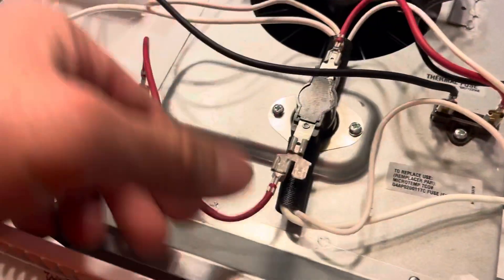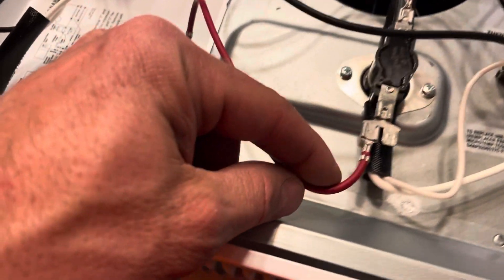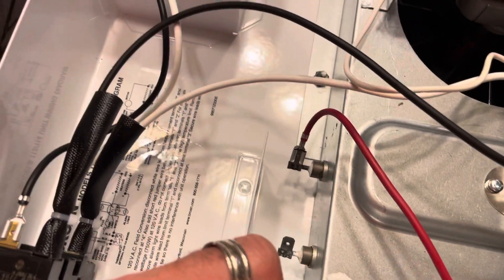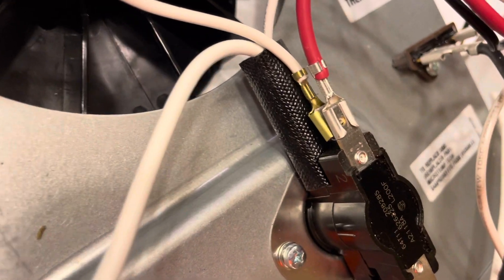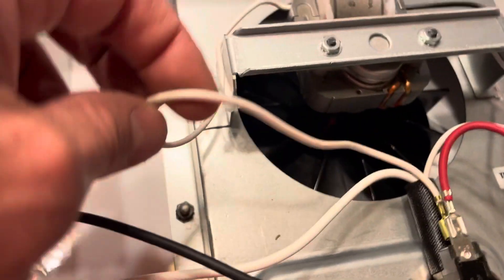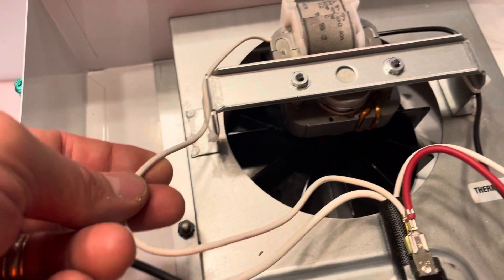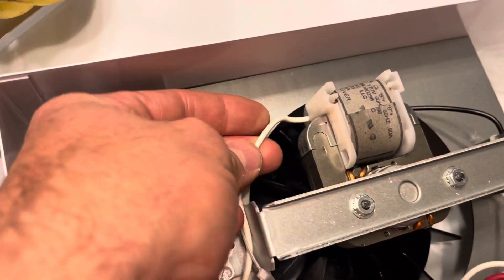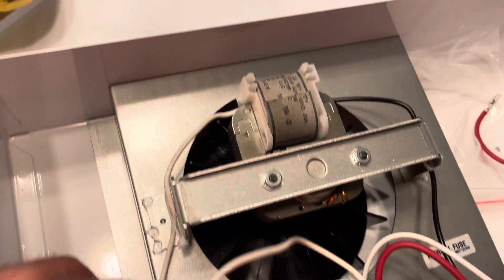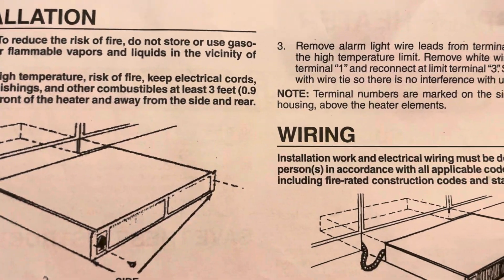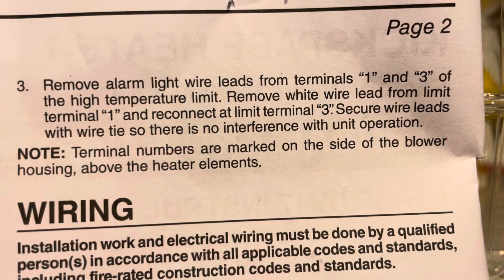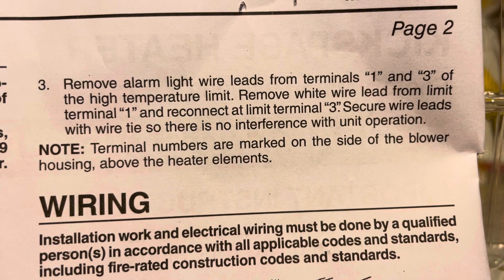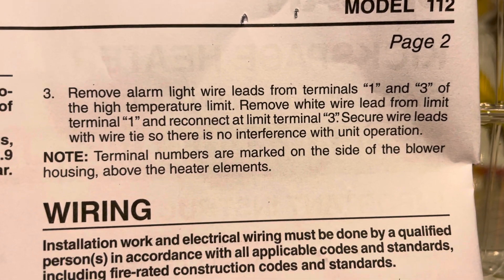So we have disconnected the white wire from here, the only one that was available because these two are underneath in the sheath we're not touching those. Disconnect the white wire and what do we do? We brought it over to this side terminal three. And the other end of that white wire, if you're wondering which one is that, they don't spell it out very clear, but it's actually the motor lead.